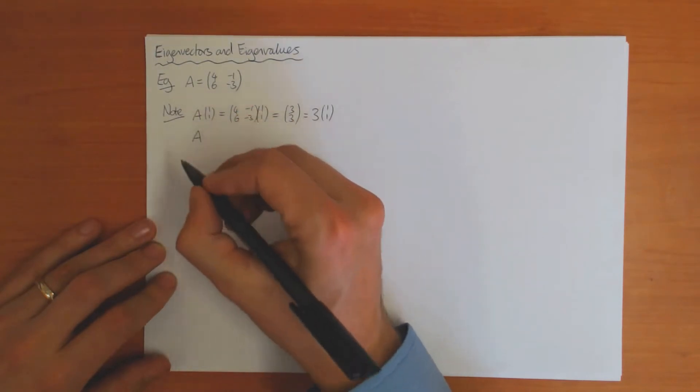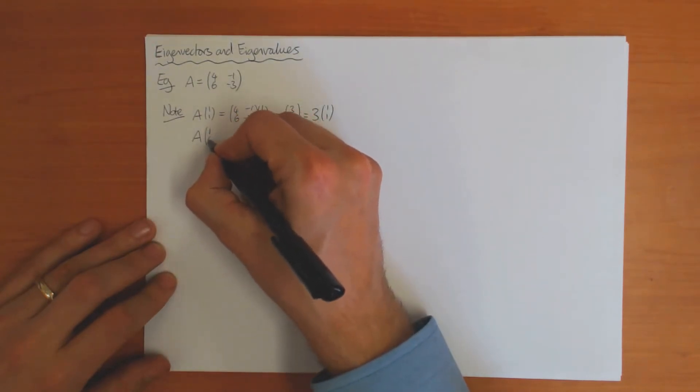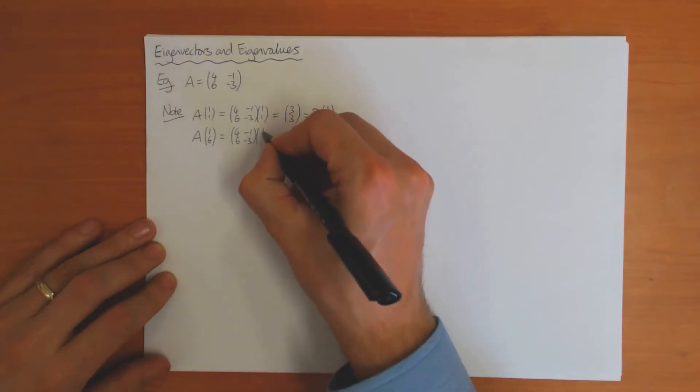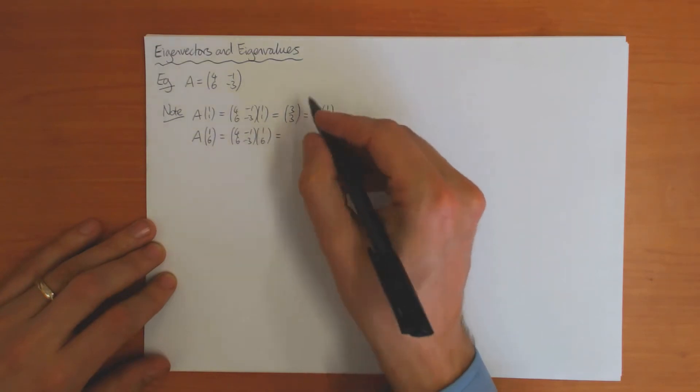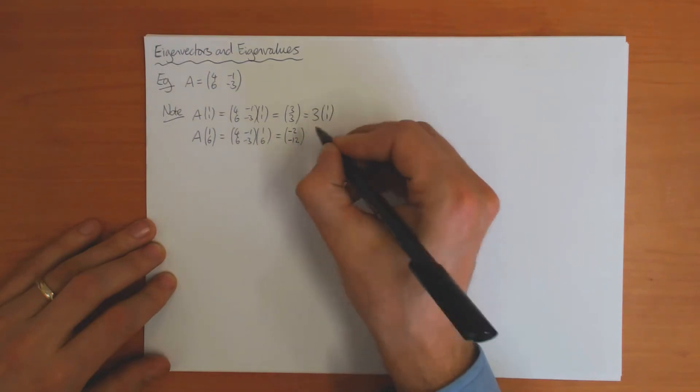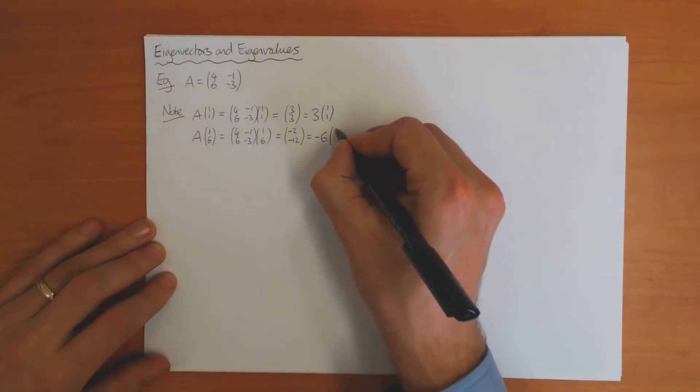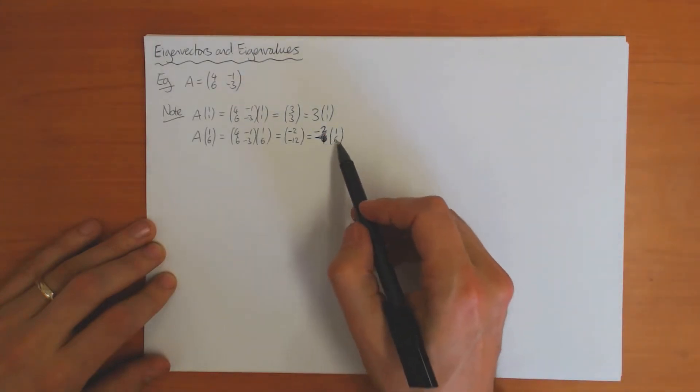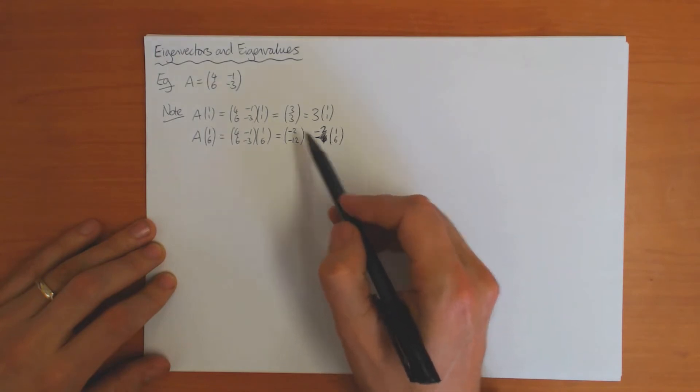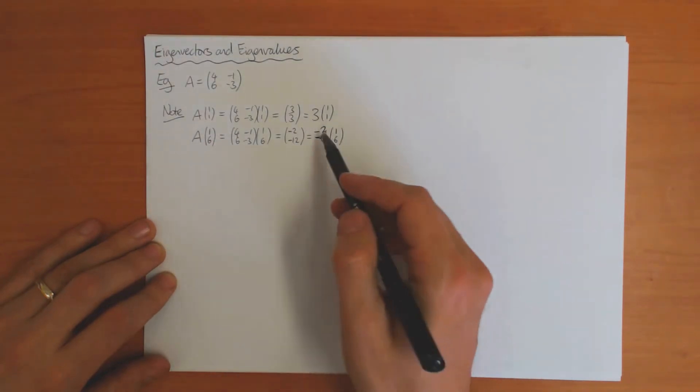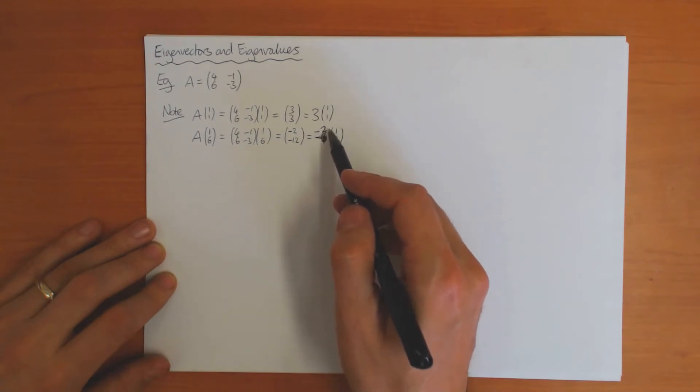Here's another example: if I consider A applied to the vector (1,6), that's [4 -1; 6 -3] times (1,6), so that's 4 minus 6 is -2, and then 6 minus 18 is -12. That's -2 times the original vector. So again this vector, the direction stays the same under the transformation A but it's just multiplied by a number.